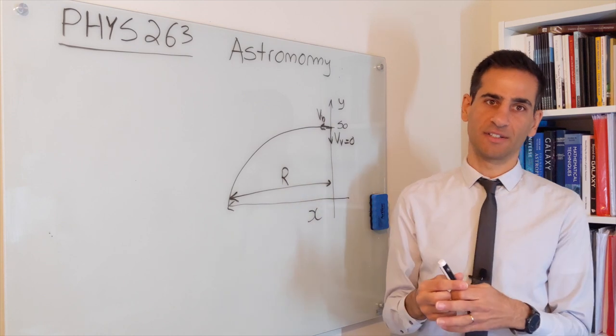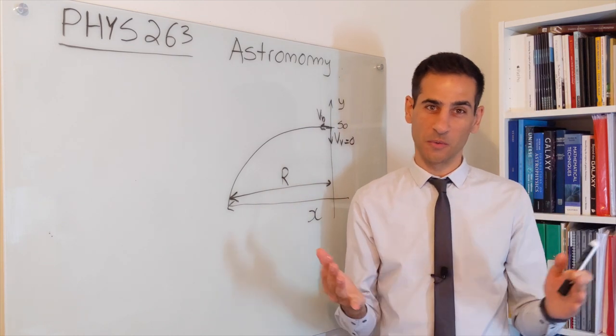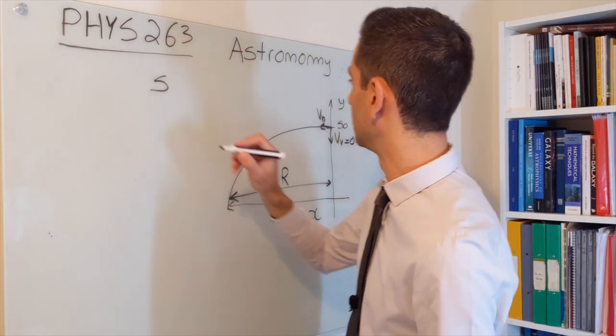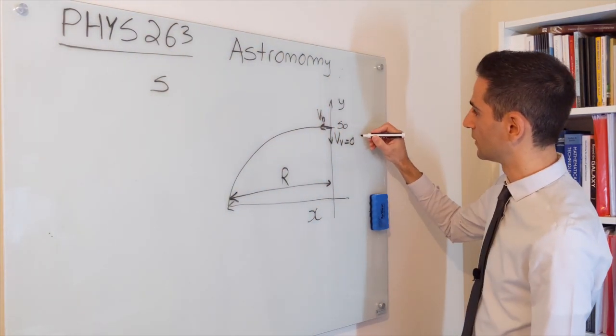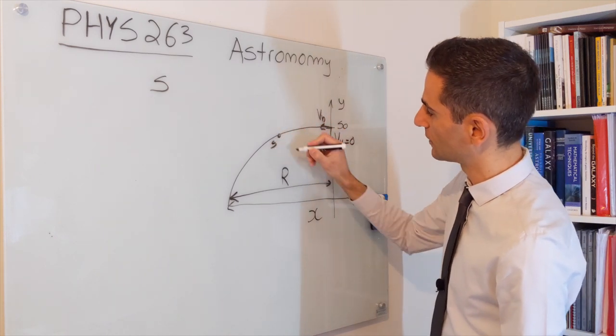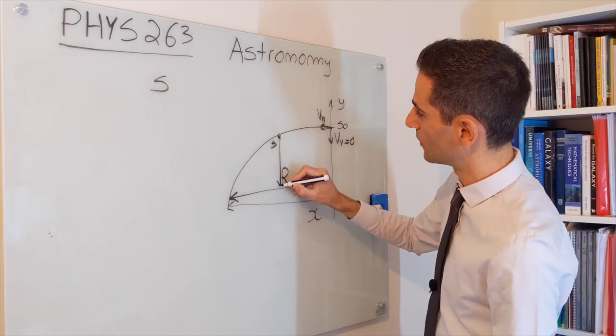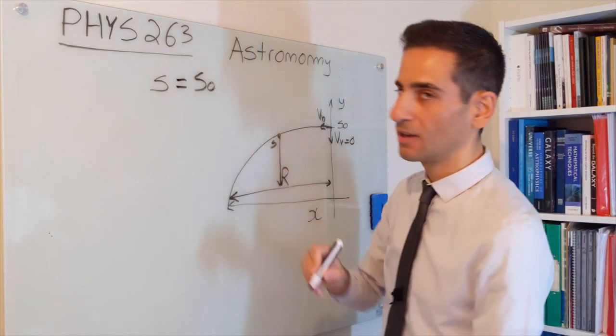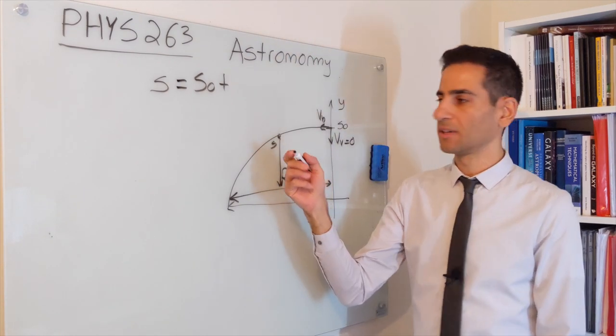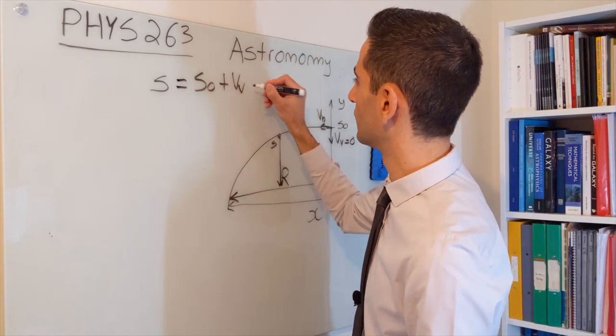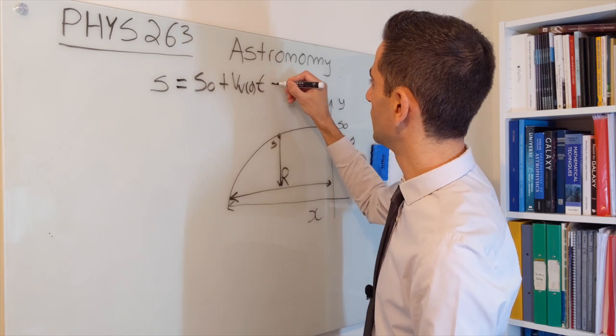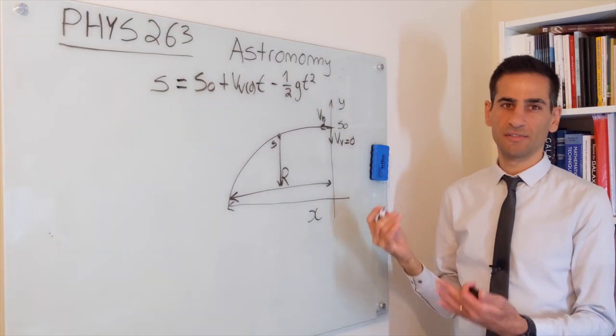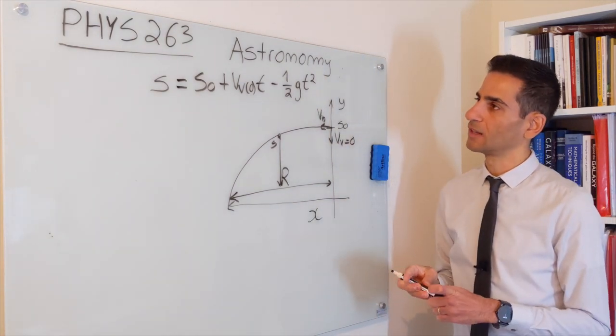Now, obviously, when you have something like this, and if you remember physics 101 or 102, we can have a look at how the height. So let's call the height that the particle has at any given moment S(t). This is going to be given by the initial position, S0 plus the vertical velocity at instance zero times t minus 0.5 g t squared.